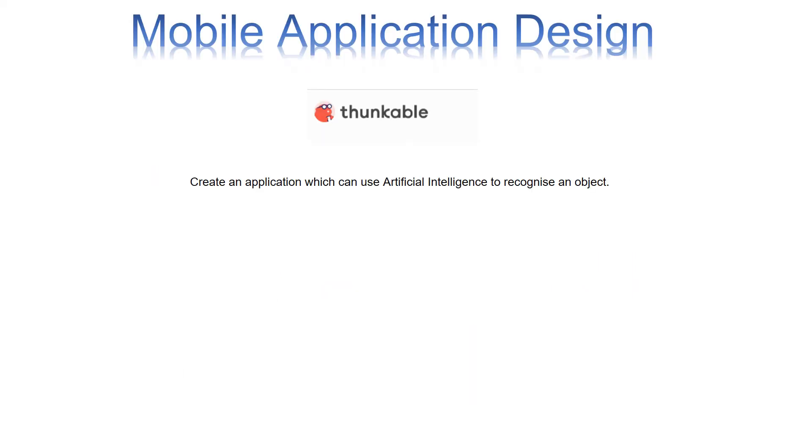The other core unit that you're going to have to complete is mobile app development. We're going to be using something called Thunkable. We're now going to complete a tutorial about Thunkable, and we're going to be looking at how artificial intelligence can recognise an object, and how we can link this and create an application to do this.